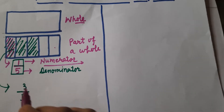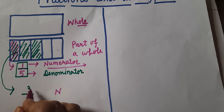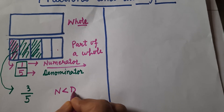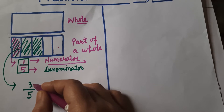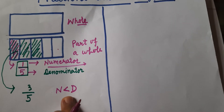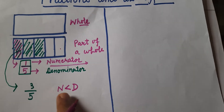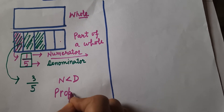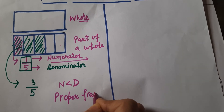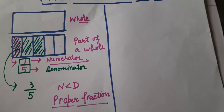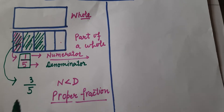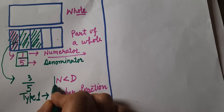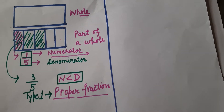Here you can see the numerator — the upside — in both fractions one by five and three by five. The numerator is less than the denominator: one is less than five, and three is less than five. So when the numerator is less than the denominator, that fraction is known as a proper fraction. This is type number one, in which the numerator is less than the denominator.